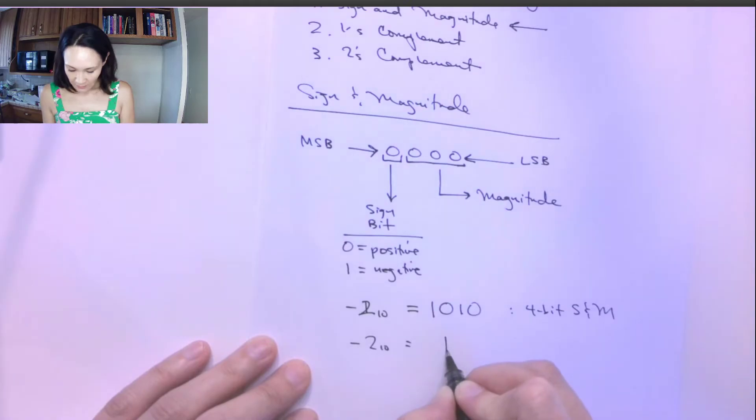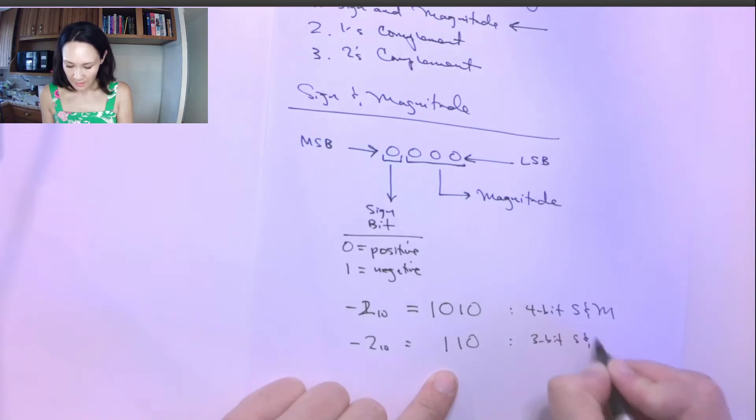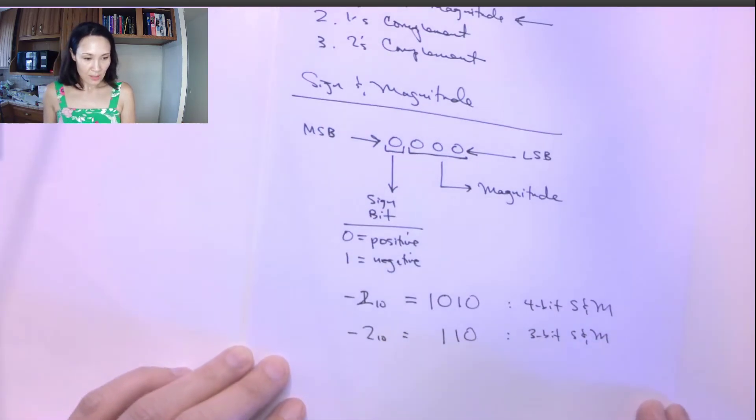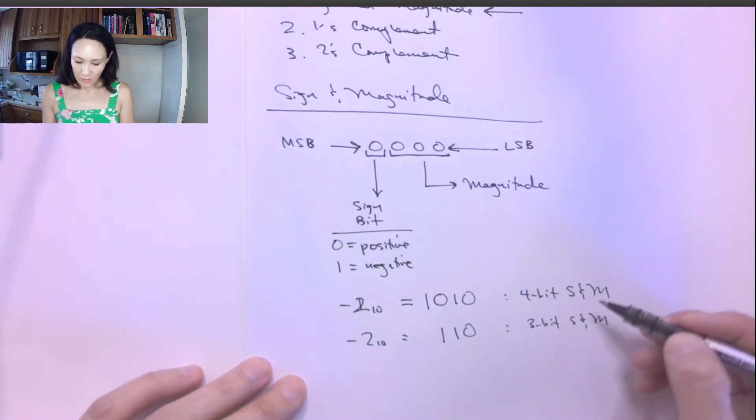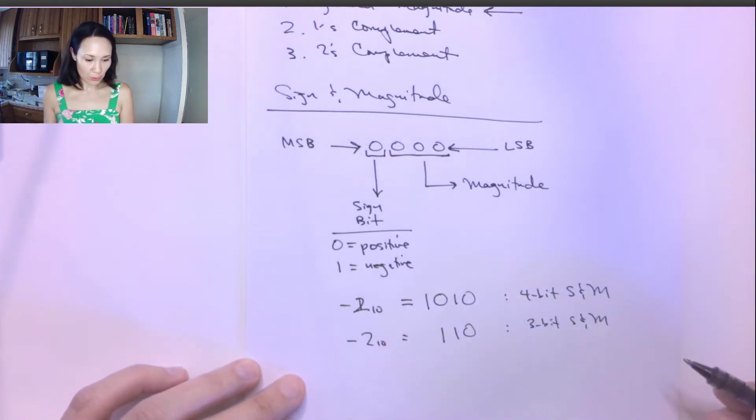This time the most significant bit would be in this position, and the one zero would be the positions to the right of that. So this would be three bit sign and magnitude convention. You see, these results are different. Therefore, it is important that we designate how many bits we have before we actually do the conversion.